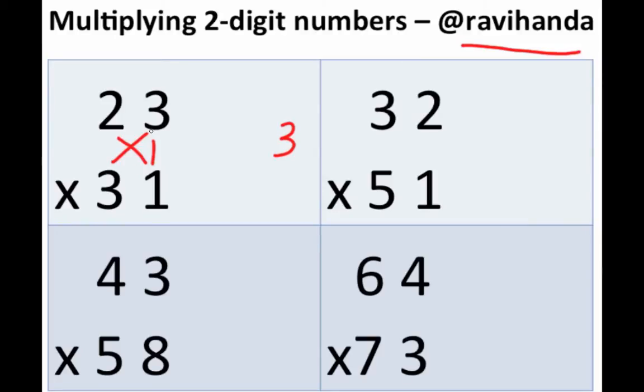2 into 1 is 2. 3 into 3 is 9. 9 plus 2 is 11, which means I got a carryover of 1 and a 1 here. How much is 2 into 3? 6, and hence my overall answer is 713.